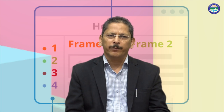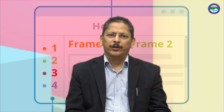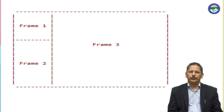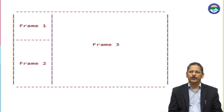Here is one more program where columns are divided into 20% and 80%. You can see the output — the first part is 20% and the second part is 80%. We have mentioned 20% comma 80%. Now with frameset rows 30%, the first row is divided into two parts: 30% comma 70%. Here 30% comma asterisk means the remaining part is 70%.